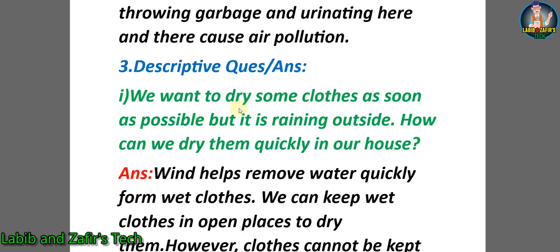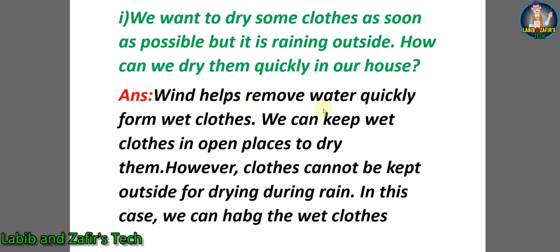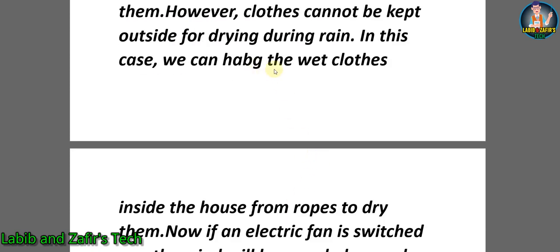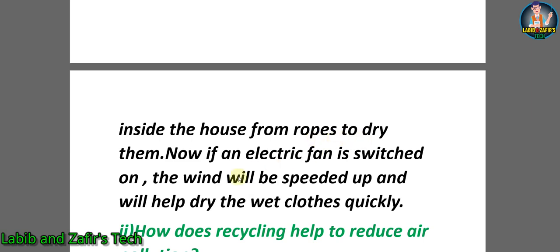Number one: We want to dry some clothes as soon as possible but it is raining outside. How can we dry them quickly in our house? Answer: Wind helps remove water quickly from wet clothes. We can keep wet clothes in open places to dry them. However, clothes cannot be kept outside for drying during rain. In this case, we can hang the wet clothes inside the house from ropes to dry them. If an electric fan is switched on, the wind will be speeded up and will help dry the wet clothes quickly.